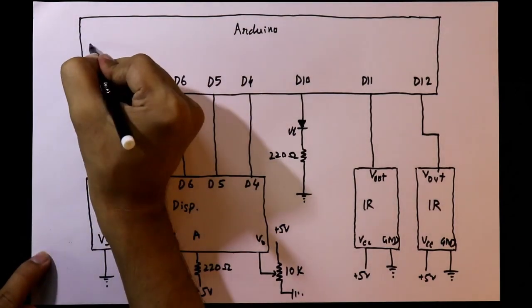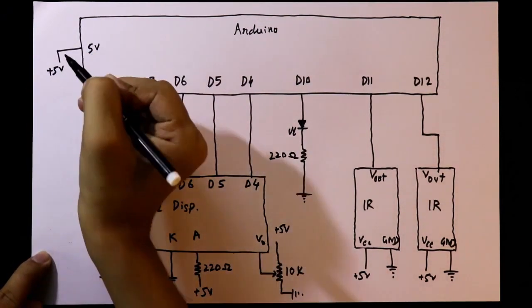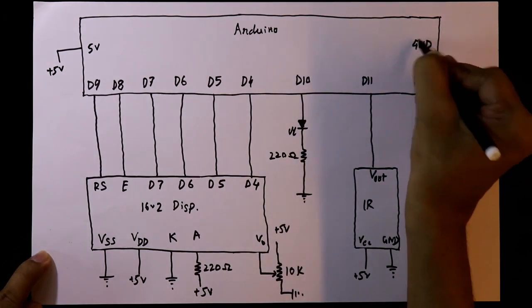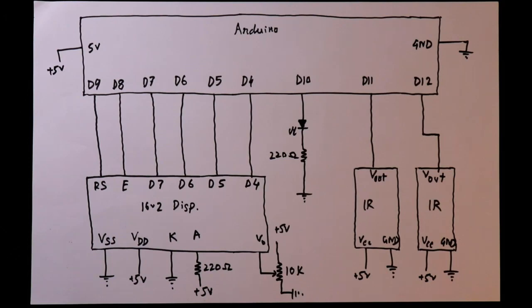Then connect 5V pin of Arduino to the plus 5V and ground pin of the Arduino should be connected to the ground. So this is all about the circuit diagram. Now see this on the breadboard.